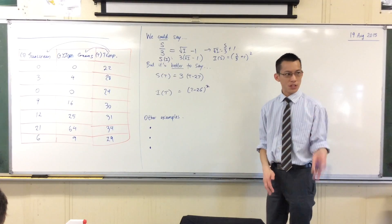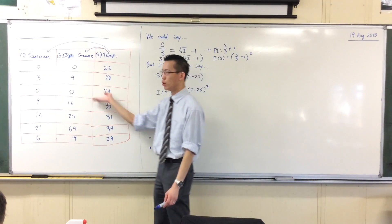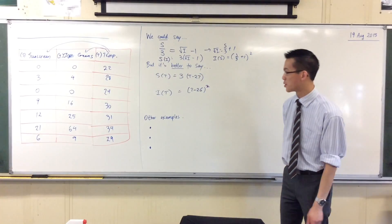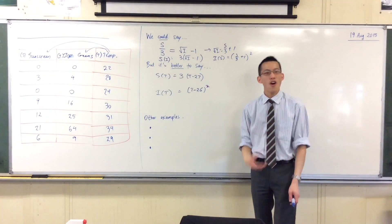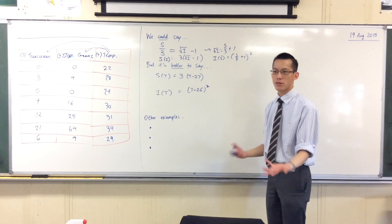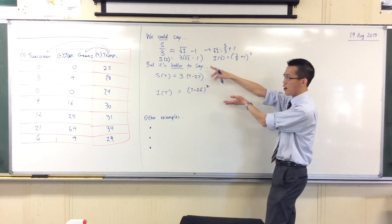Now there's something I've left off, which is that on some days it's just too cold for anyone to buy sunscreen or ice creams. Maybe I close up shop, or maybe no one even visits the beach. So therefore I have a restriction on this. These functions of sunscreen and ice cream make sense for only certain values.